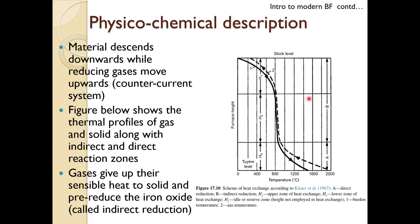There is an indirect reduction zone and a direct reduction zone in terms of chemical reactions. Below that is a preheating zone. Once the material crosses the stack region into the preheating zone, the gas temperature is always higher. The top gas comes out at around 200–250°C. That is the typical temperature profile in a blast furnace.